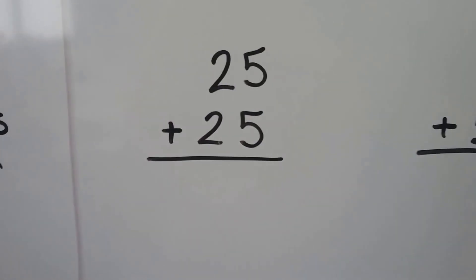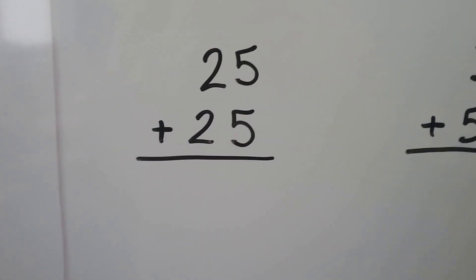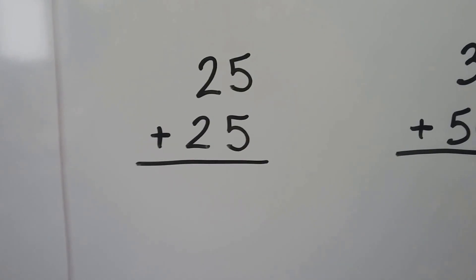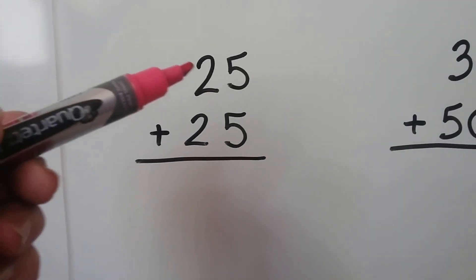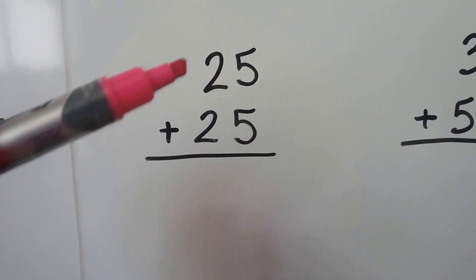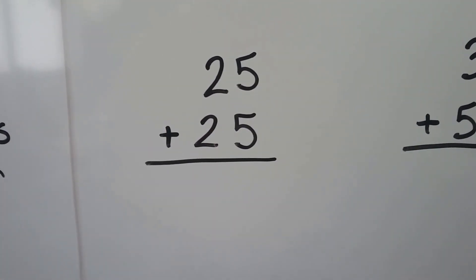Let's try another one. Here we have 25 plus 25. Do you remember counting by 25s? Do you remember a quarter is 25 cents? And we talked about that in chapter 4. We can count by 25s: 25, 50. But let's add them.